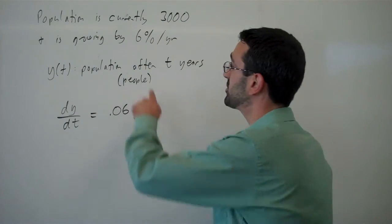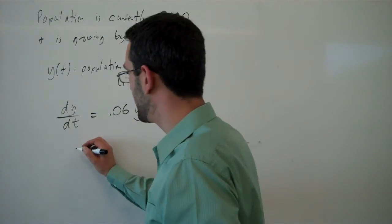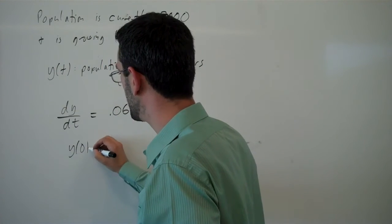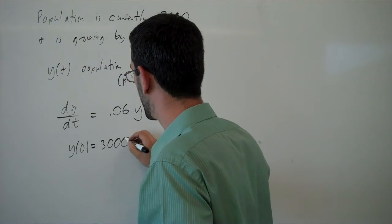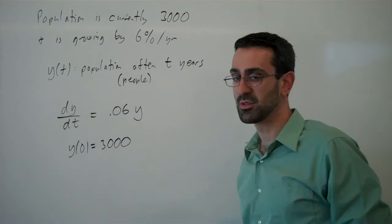Now, we're also told that the population is currently 3,000, and that gives us an initial condition of y(0) = 3,000.